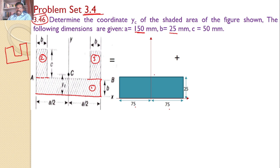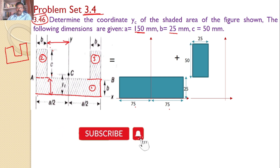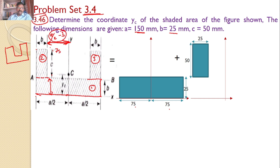With reference to the same x-y axis, I am taking area 2. What are those dimensions? The width is equal to 25 and the height is equal to 50. This area is at a distance of a/2 minus b from the y-axis. The total is a/2, which is 75, and b is 25, so a/2 minus b equals 50. The height from the x-axis to the centroid of area 2 — this height is equal to b, which is 25.